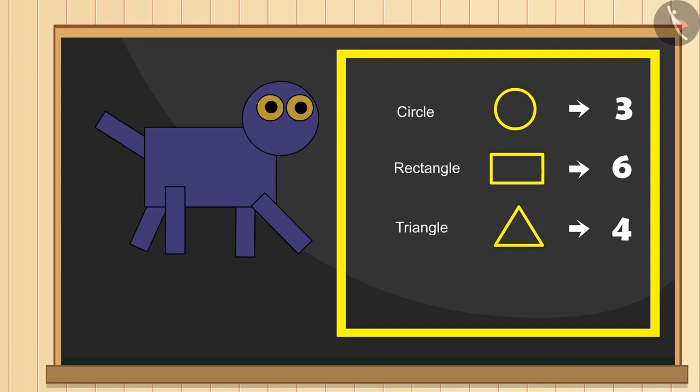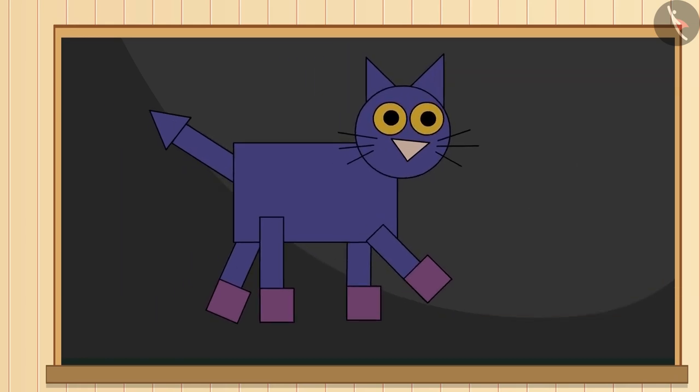Now its ears, nose and upper part of its tail can be made with four triangles. At the end, its claws from four squares. See, the cat is drawn.